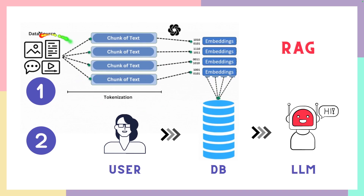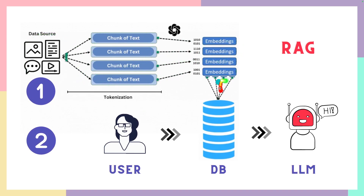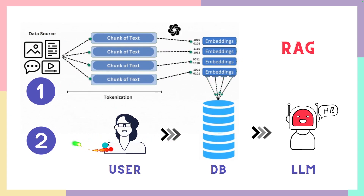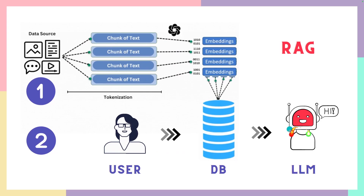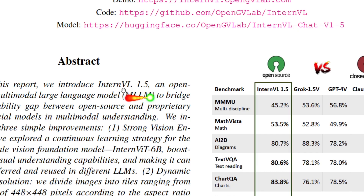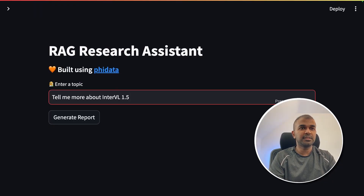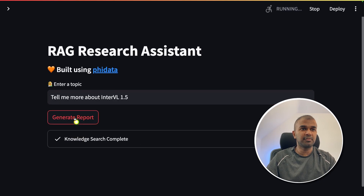This is the process: when we load a PDF, it gets converted to chunks, then converted to embeddings, and stored in the database. When we ask a question as a user, that information is used by the large language model to respond. In that paper we see content about InternVL 1.5, so we are going to ask: 'Tell me more about InternVL 1.5' and click Generate Report.